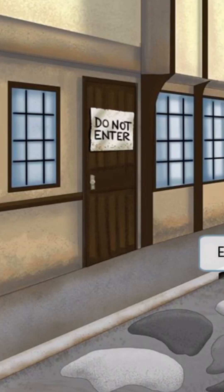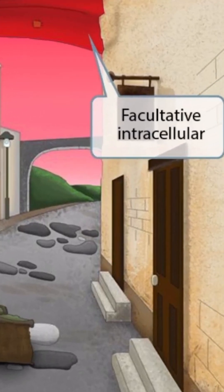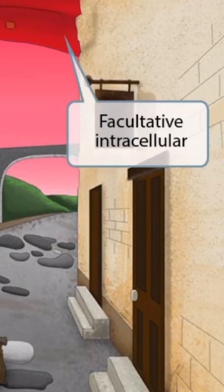Everything next to the do not enter sign will be specific to Yersinia enterocolitica. Next, notice that we've shown a red canopy covering the entire alleyway. This is similar to the pavilion we've shown in other images — it's outdoors but provides some covering, so it's like the person is inside of a home yet outside at the same time. Just like this organism can exist inside or outside of the host cell. So the canopy covering is here to help you remember that Yersinia pestis and Yersinia enterocolitica are facultative intracellular.